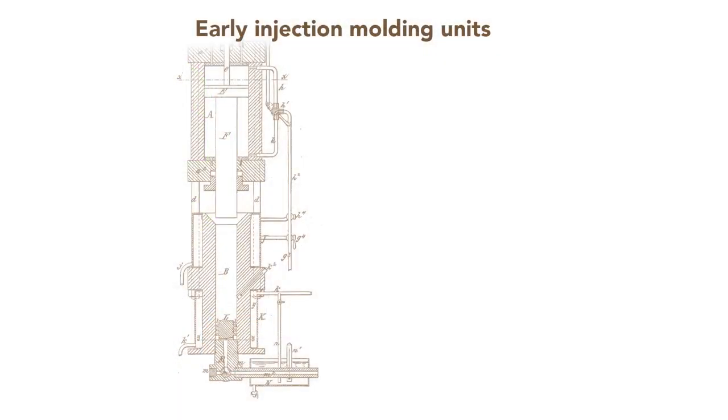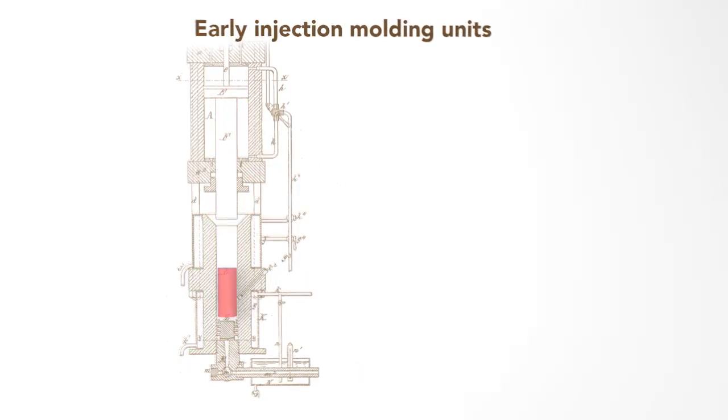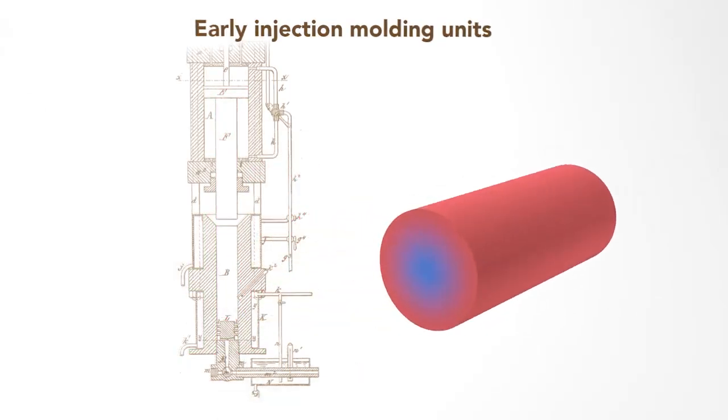Before the mid-20th century, injection molding machines used only external heating of the barrel to melt the plastic before a plunger injected the molten material. But because plastic conducts heat poorly, the temperature was uneven in the barrel. Either the middle was too cool and not fully melted, or the outer regions were too hot and degraded the plastic.